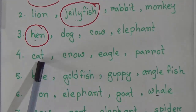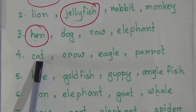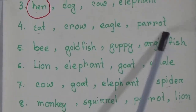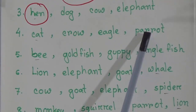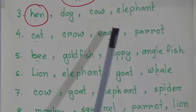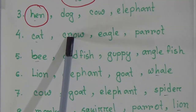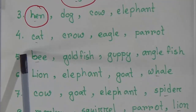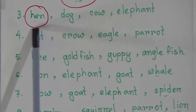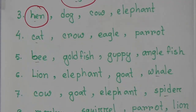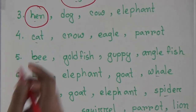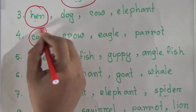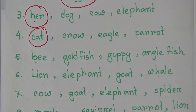Our fourth odd one out is: cat, crow, eagle, parrot. Here parrot, eagle, and crow are all birds, but cat is an animal. That means cat is the odd one out.